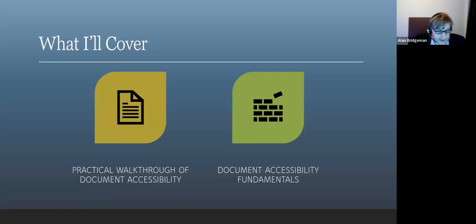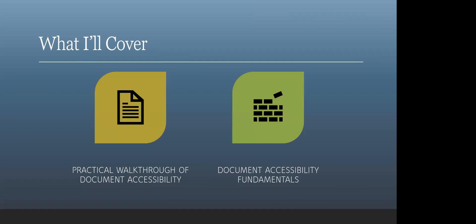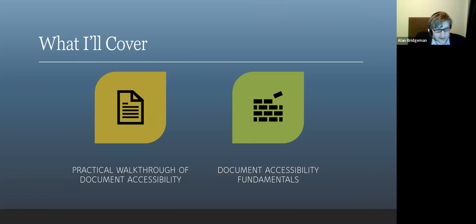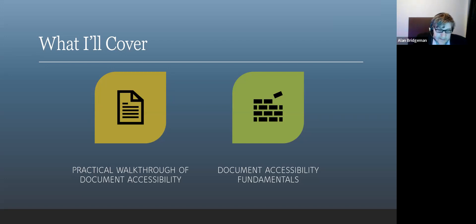What we're going to go through: first, I'll do a walkthrough of Word and Acrobat — which is PDF, for anyone unfamiliar. Then we'll go over some basic fundamentals. This is meant to be a really fast, quick overview — not to get into the details — but to give you a real good sense of what things you can do as a best practice right away, and where document accessibility is coming from.